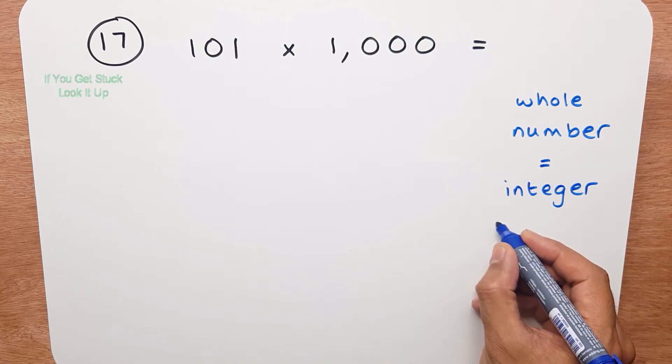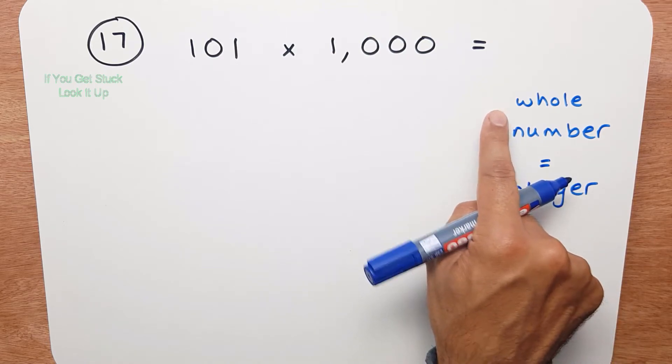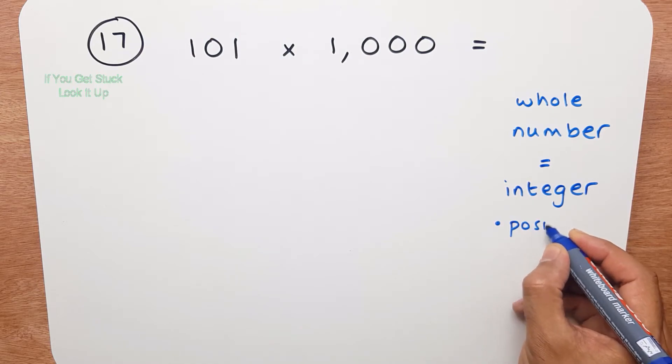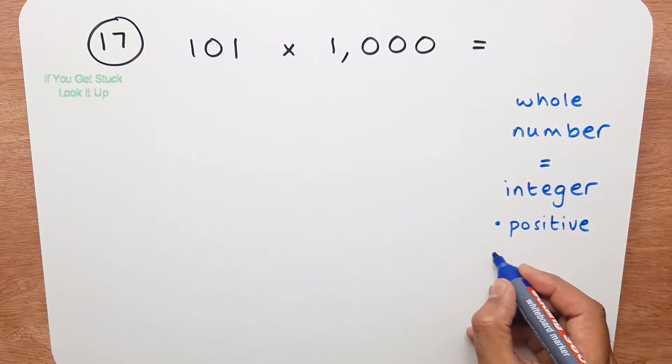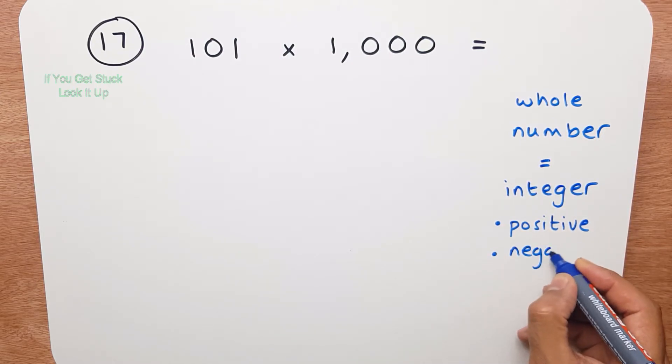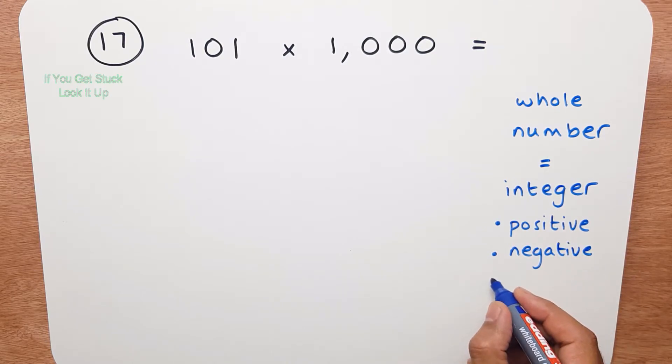And what is an integer? It's a whole number. It can be a positive whole number, it can be a negative whole number, or it can be zero.